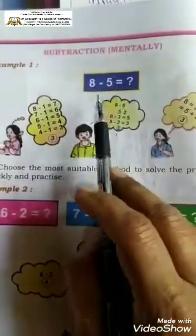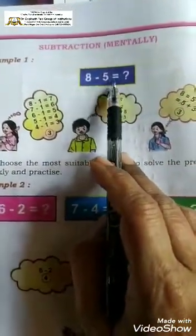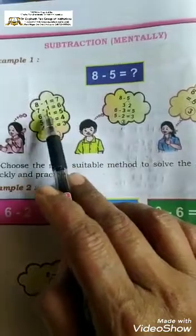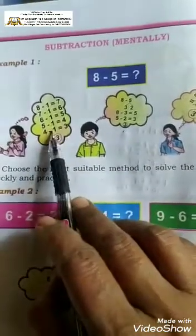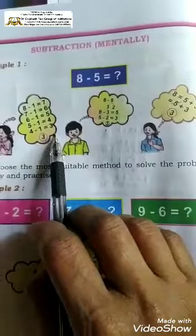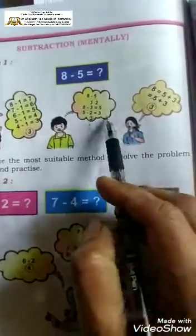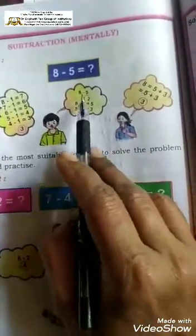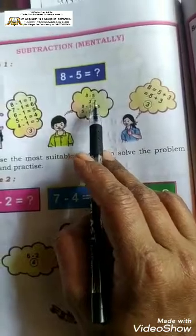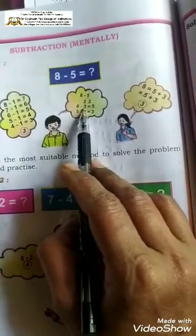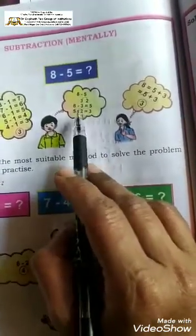In the same way, we have subtraction. 8 minus 5: doing 8 minus 1 is 7, and so on, will be too late and takes much time. So we have to use the shortest method. 5 can be written as 3 and 2 — so first subtract 3, and we will get the answer.